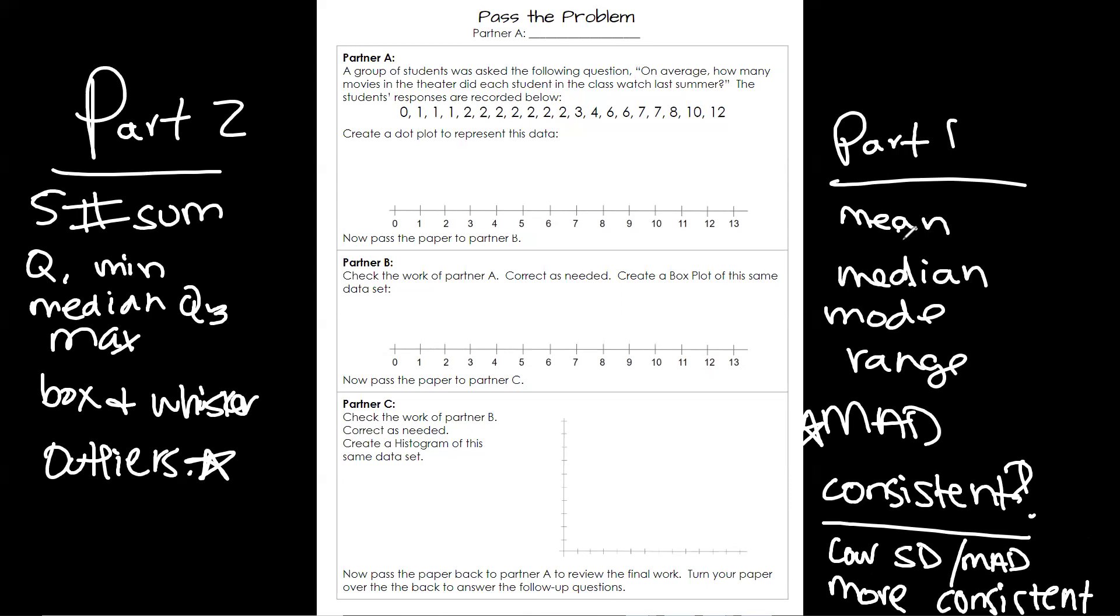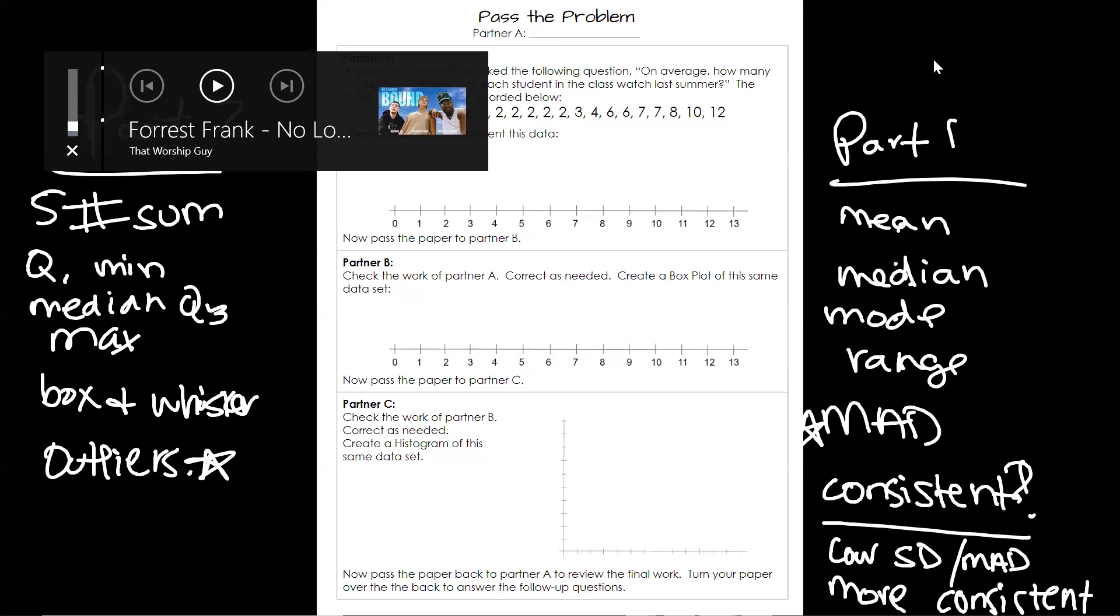So I would like for you to find the mean, median, mode, and range. Are we okay on those four? Do we need a review? Mean, you add them up and divide by how many there are. Median, you find the middle number. Mode is most often. It can be more than one mode. FYI. And then range, highest minus lowest. Take a second, find those. So we're going to go through these pretty quickly.